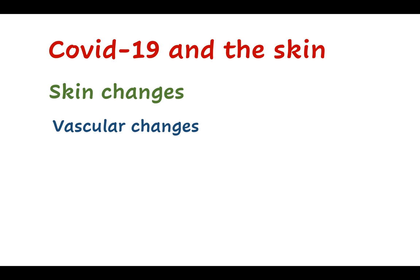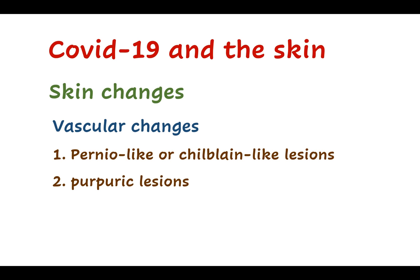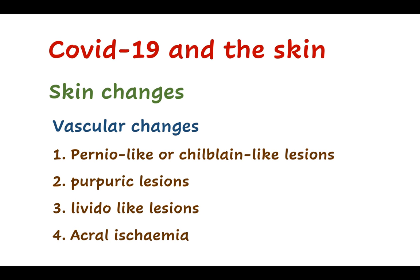Now, the vascular changes. These include the following: pernio-like or chilblain-like lesions, purpuric lesions, livedo-like lesions, and acral ischemia.